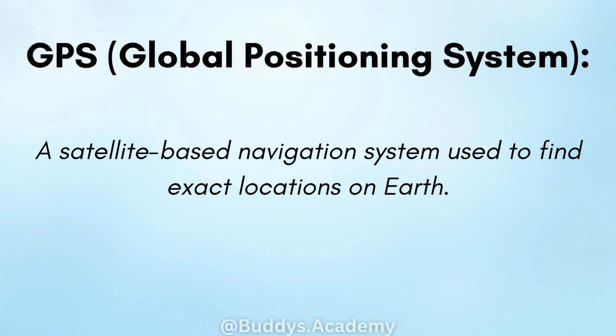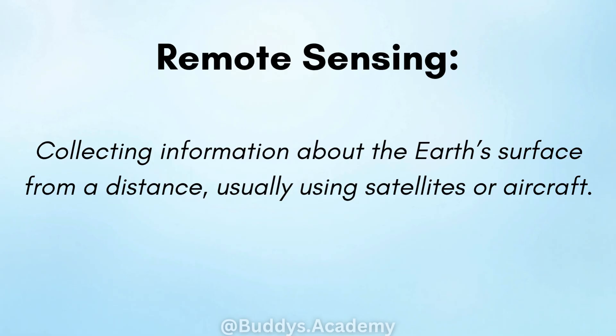GPS — Global Positioning System: this is a satellite-based navigation system that is used to find exact locations on earth. Remote sensing: this is collecting information about the earth's surface from a distance, usually using satellites or an aircraft.